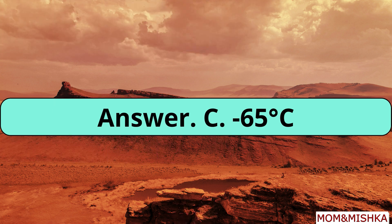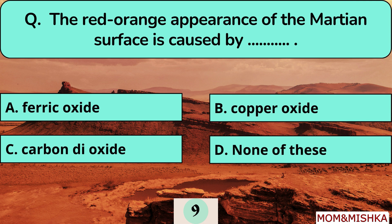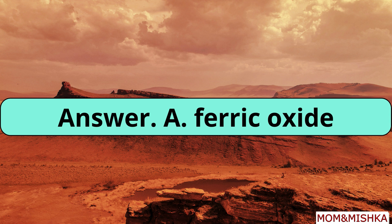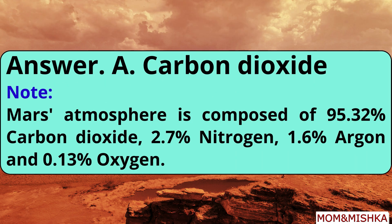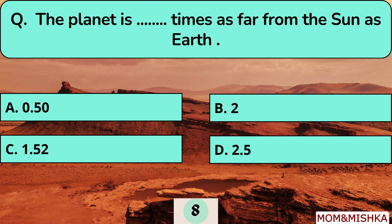The red-orange appearance of the Martian surface is caused by ferric oxide. Mars's atmosphere is composed of 95.32 percent carbon dioxide, 2.7 percent nitrogen, 1.6 percent argon, and 0.13 percent oxygen.